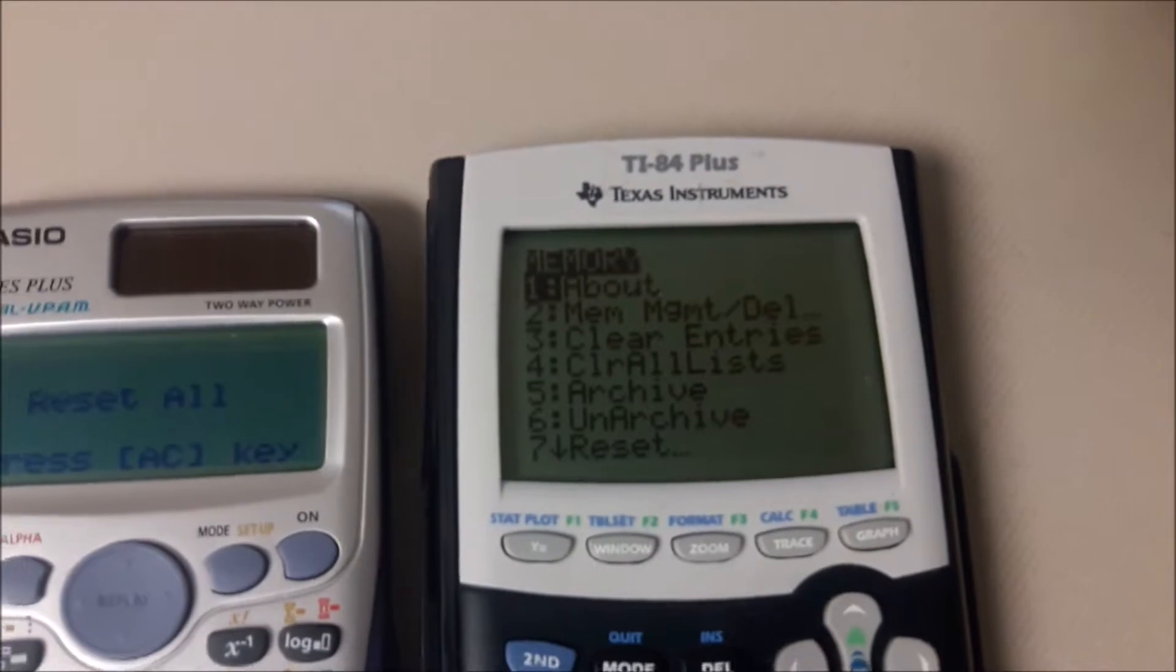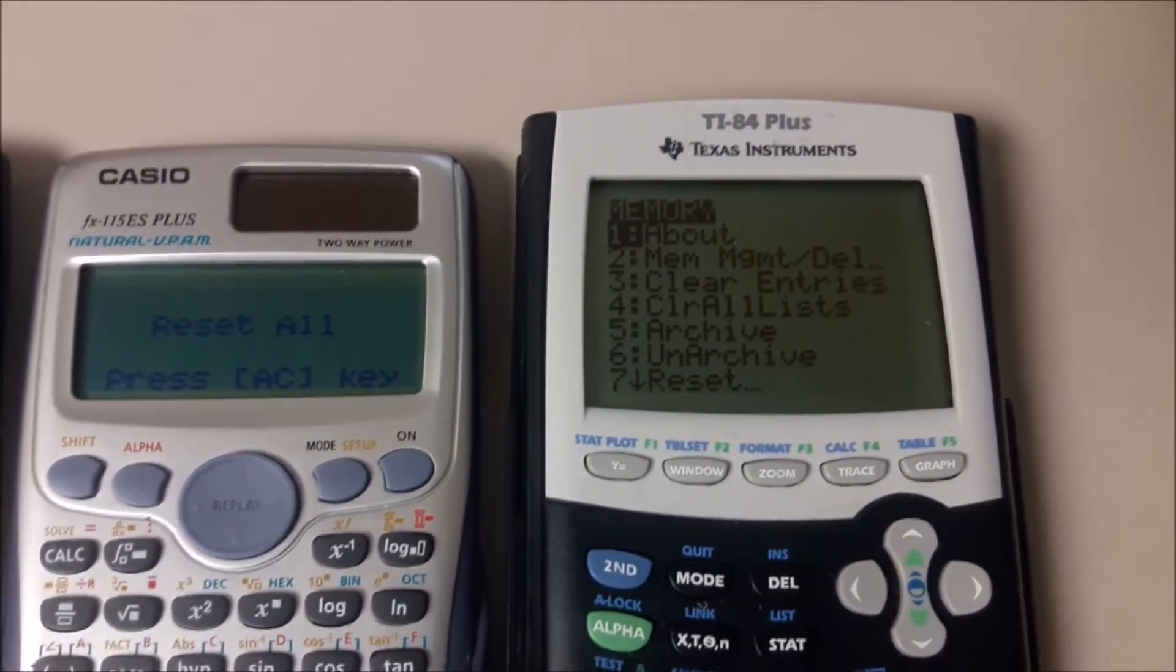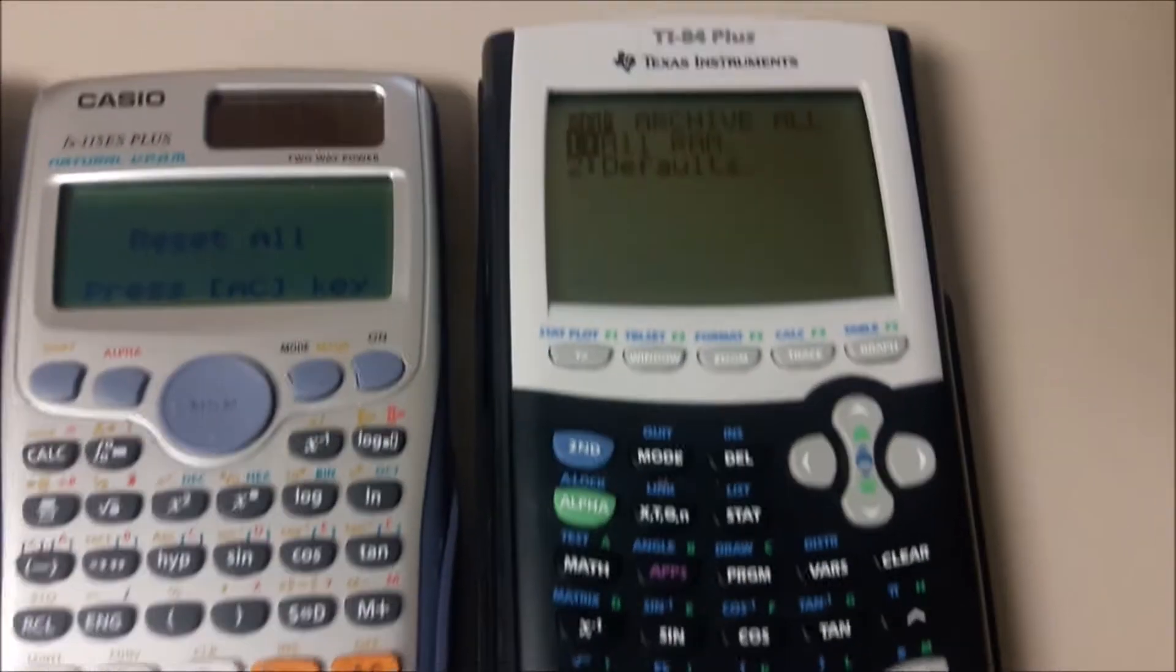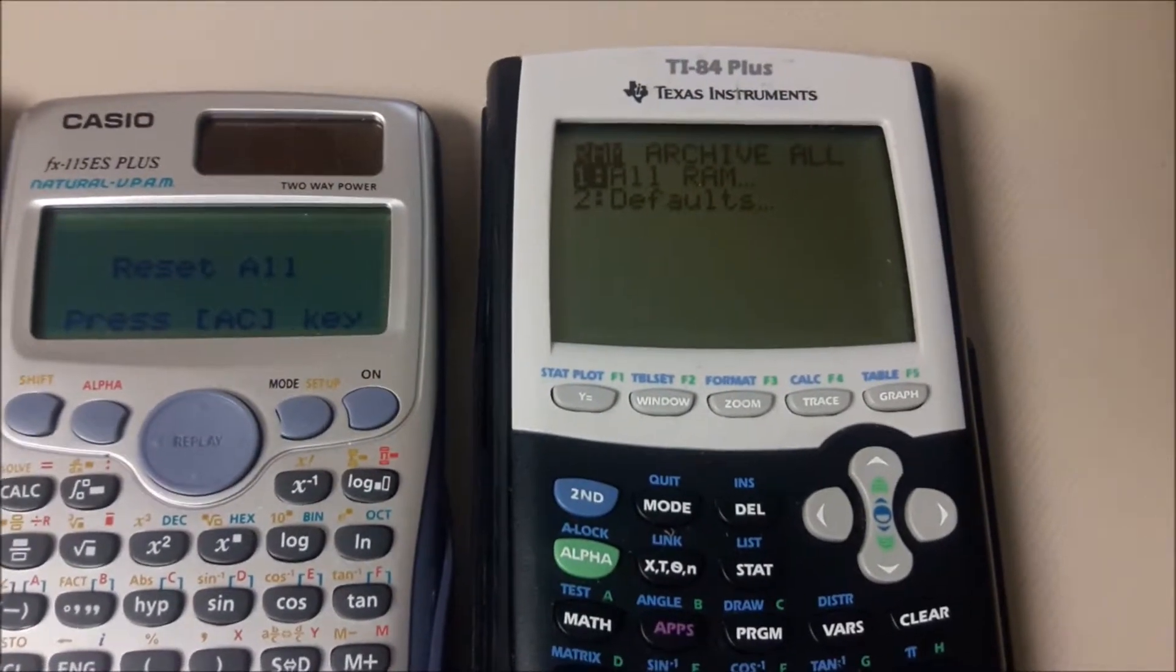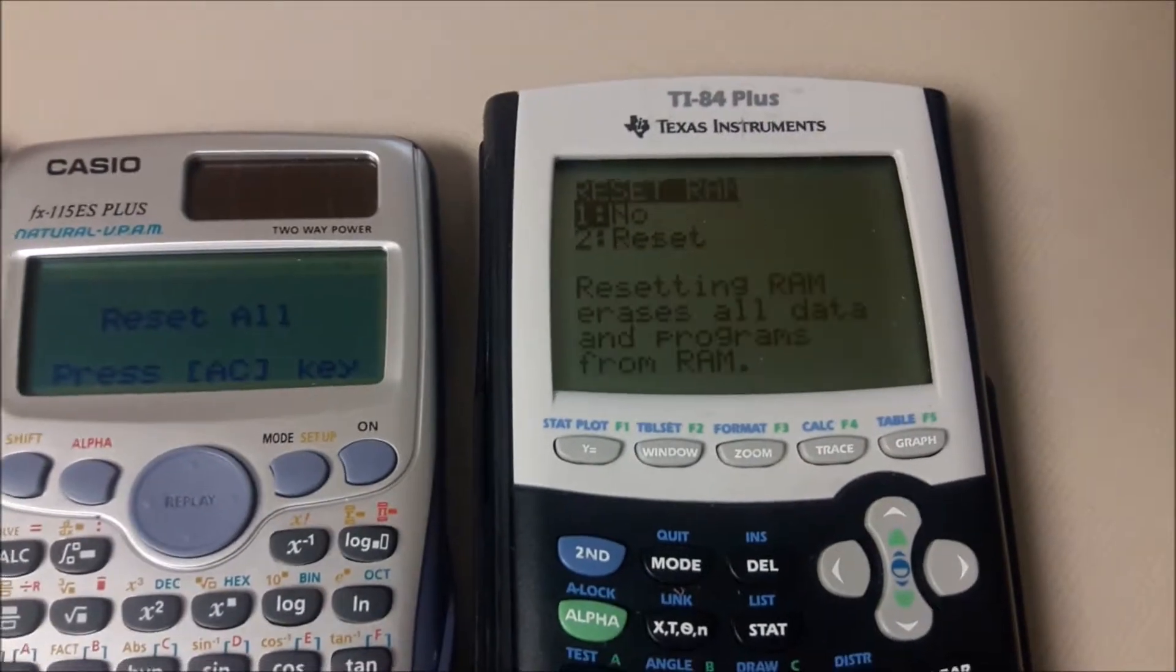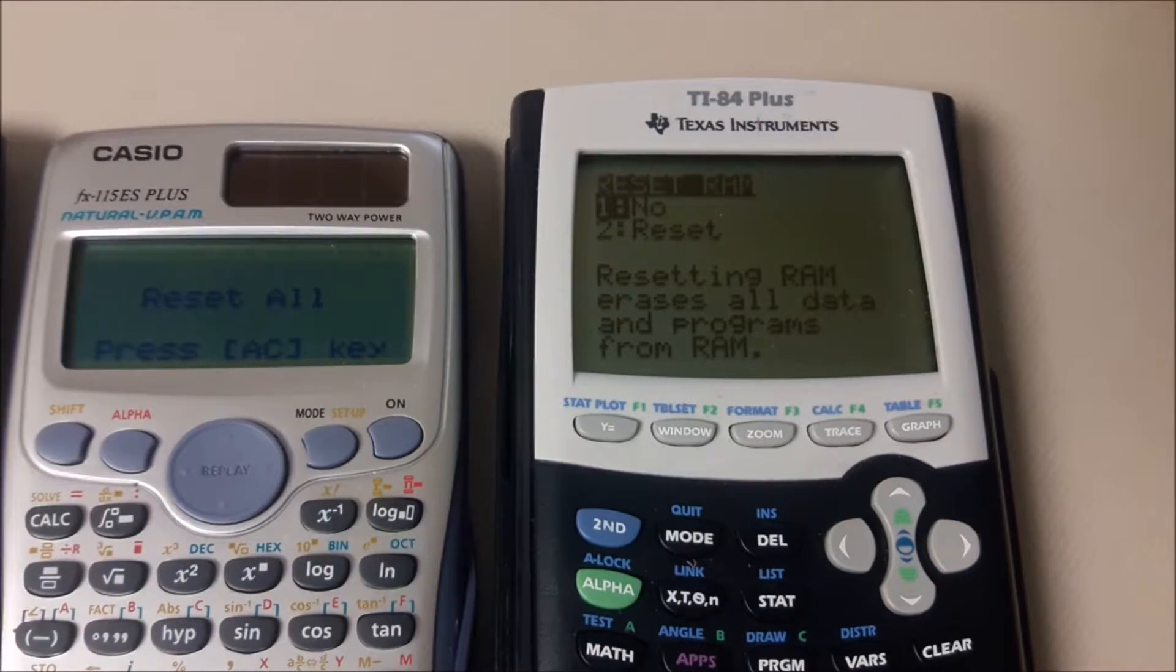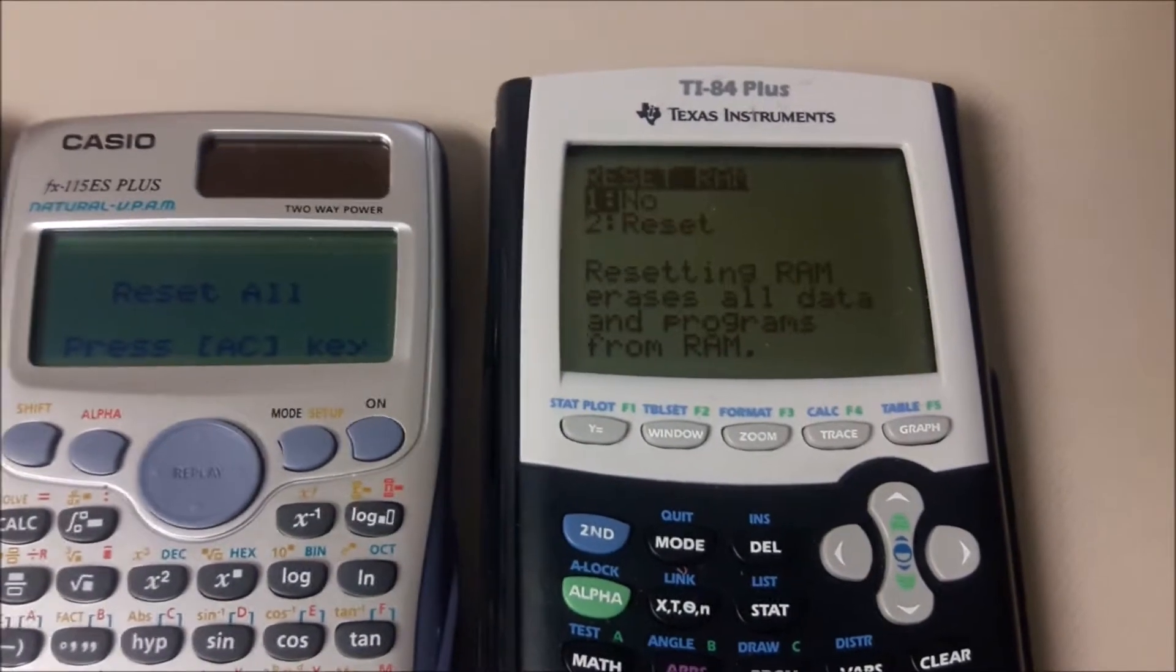And then there's a bunch of options that come up. We want number 7. And I'm going to go ahead and clear everything. That would be option number 1. And then I'm going to pick option number 2 to reset.